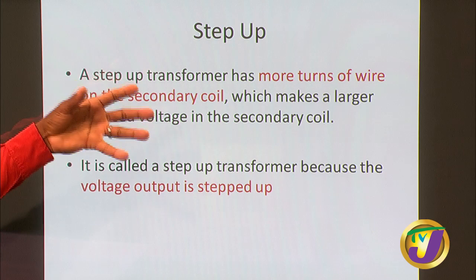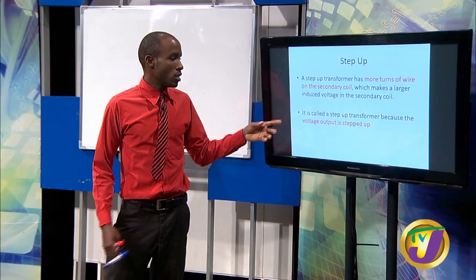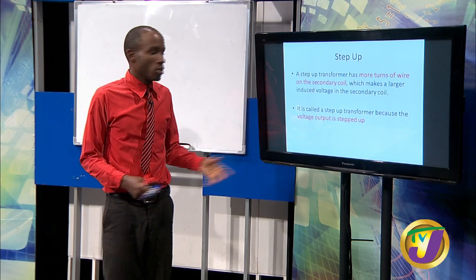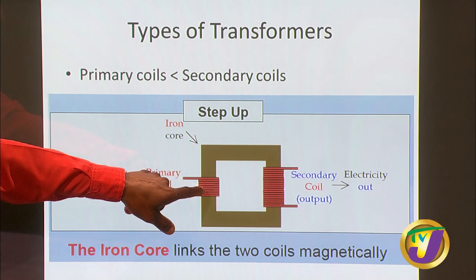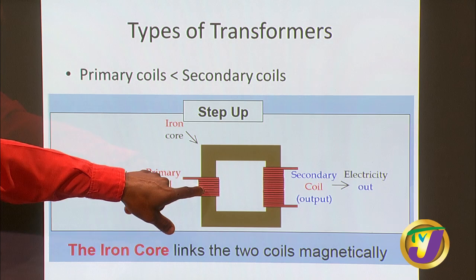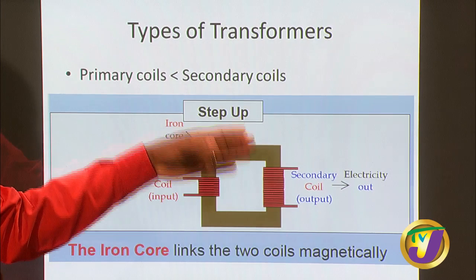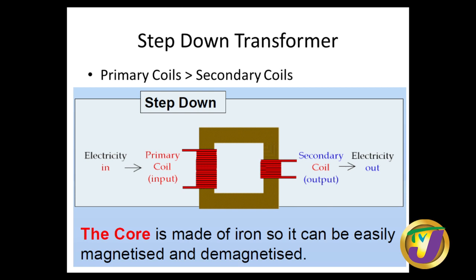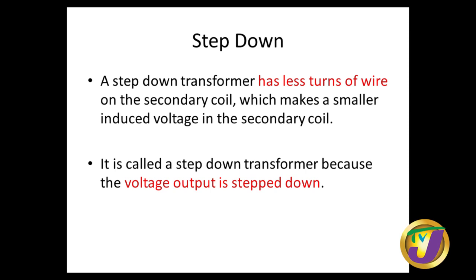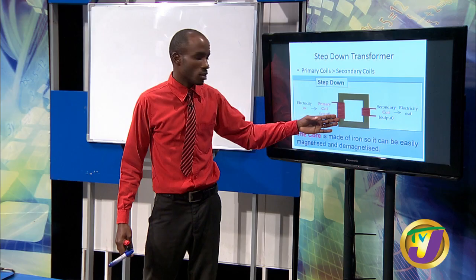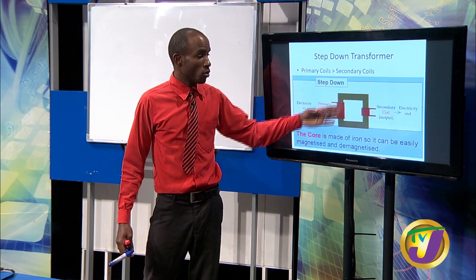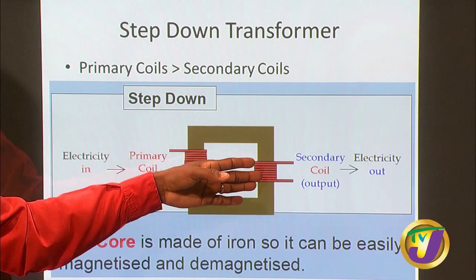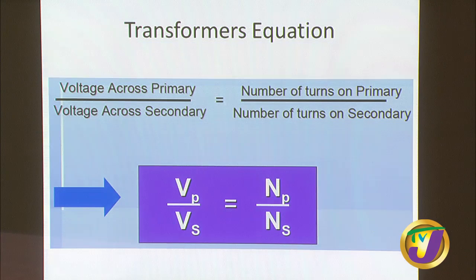If you counted the coils on the diagram, you'd see there are more coils on the secondary side — so the step up will have more coils on the secondary than the primary. More coils on the secondary means higher voltage output. The other type is the step down. As the name suggests, it is bringing down the voltage. For the step down, you essentially have less turns of wire on the secondary, which makes a smaller induced voltage. It's called a step down because the voltage output is stepped down — the number of coils on the primary are more than on the secondary.